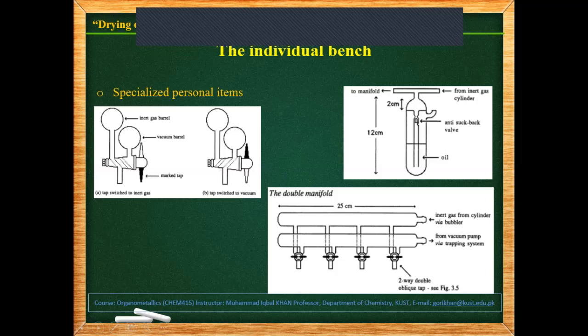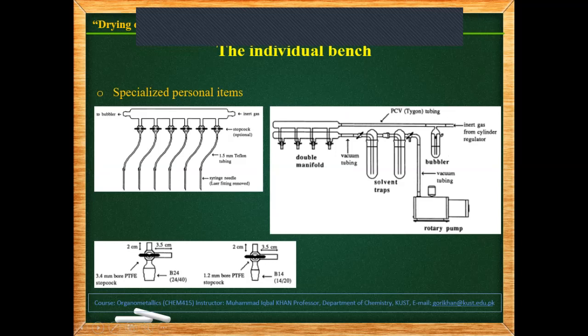Then we have the bubbler, which is used for maintaining pressure from the cylinder into the Schlenk line. Here is a communal Schlenk line provided only with the provision of inert gases. There is also a double manifold with two new additions: cold traps and a rotary pump, which is used for producing vacuum. Inside these glass traps, solvents are trapped; they are usually filled with liquid nitrogen for trapping organic solvents.